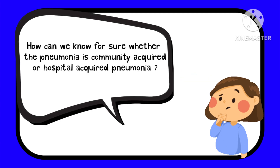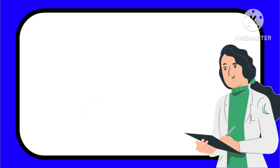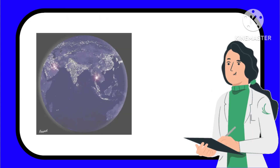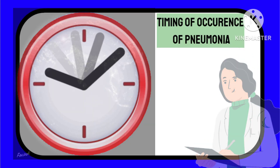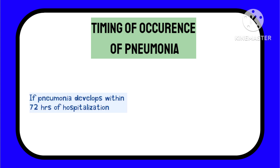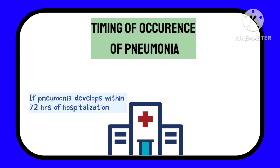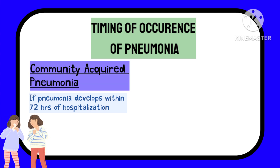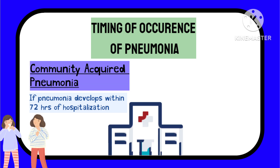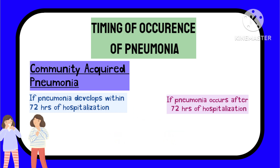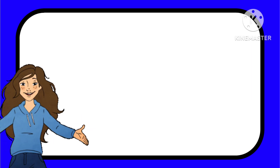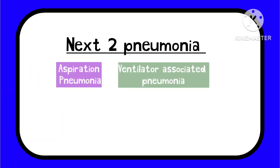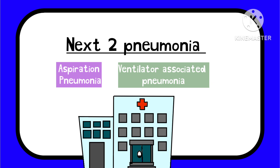Now you may wonder how you can know for sure whether a patient's pneumonia is community acquired or hospital acquired. A simple criteria used clinically worldwide is the timing of when the pneumonia occurred. If pneumonia develops within 72 hours of hospitalization, it is considered community acquired pneumonia. If it occurs after 72 hours of hospitalization, it is considered hospital acquired pneumonia.